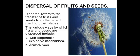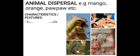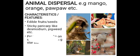The various ways by which fruit and seed are dispersed include: self-dispersal or explosive mechanism, animal dispersal, water, and wind. Examples of fruits dispersed by animals include mango, orange, purple, etc. The characteristics of these fruits include: number one, they must be edible; number two, they have a sticky pericarp, like in Desmodium and pigweed. The pericarp is the outer covering of the fruit, comprising the epicarp, mesocarp, and endocarp.